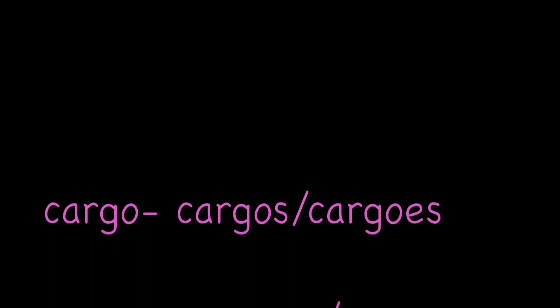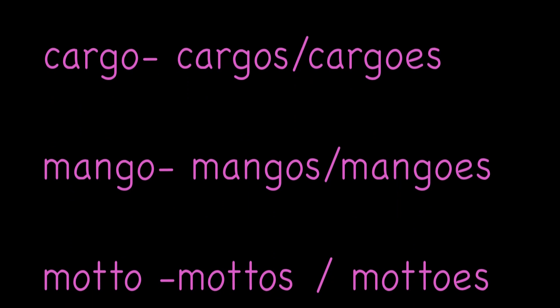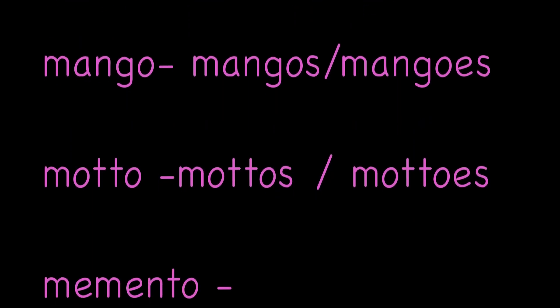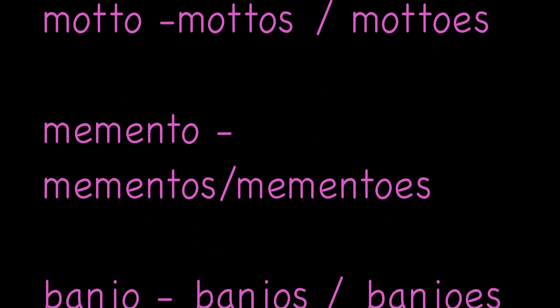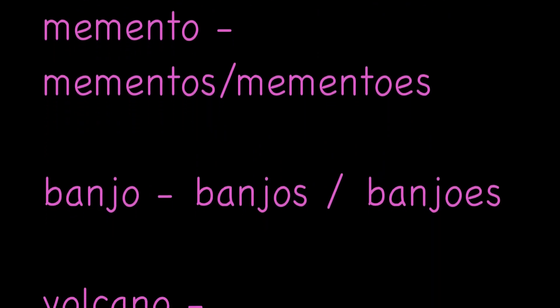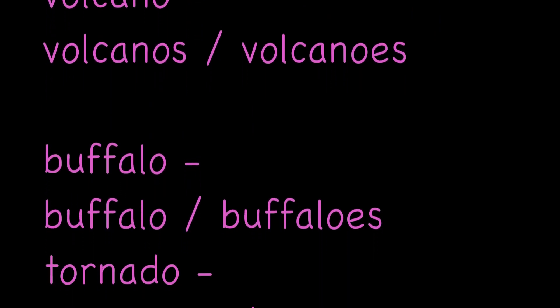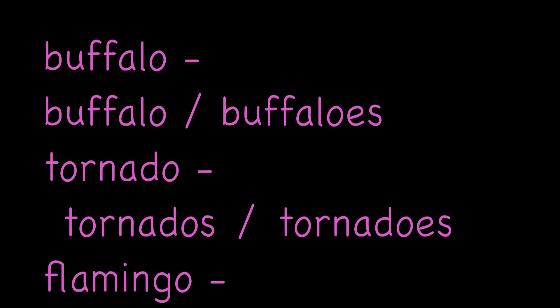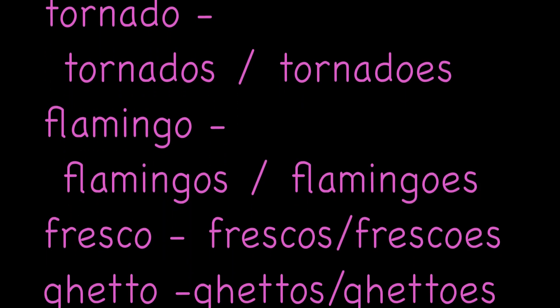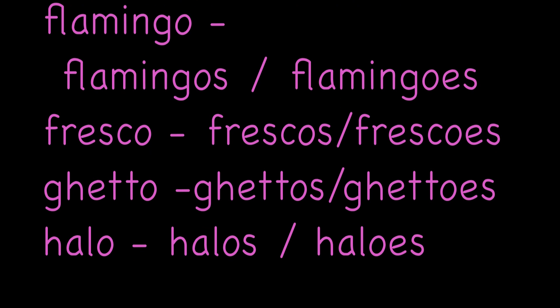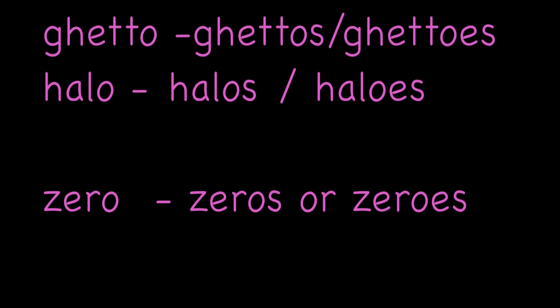Now number four: we have some words ending in O that can be spelled with either S or ES. Cargo — cargos or cargoes, mango — mangos or mangoes, motto — mottos or mottoes, mementos, banjos, volcanoes or volcanos, flamingos or flamingoes, buffaloes or buffalos, tornadoes or tornados, frescoes or frescos, ghettos, halos, and zeros again — as I said, some dictionaries allow the ES.